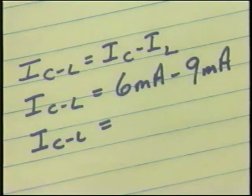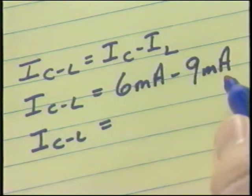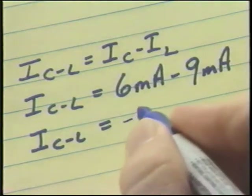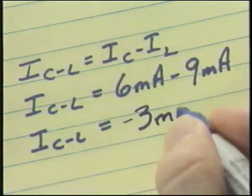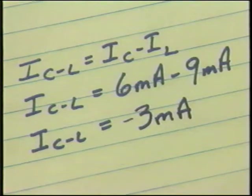In another case, suppose that the inductive current is 9 milliamps and the capacitive current is 6 milliamps. The total reactive current would be I sub C minus I sub L, or 6 milliamps minus 9 milliamps, which yields minus 3 milliamps. The minus sign indicates a current lagging by 90 degrees.